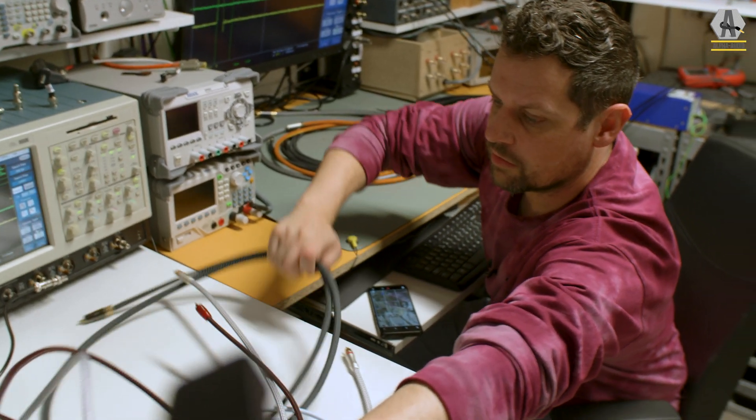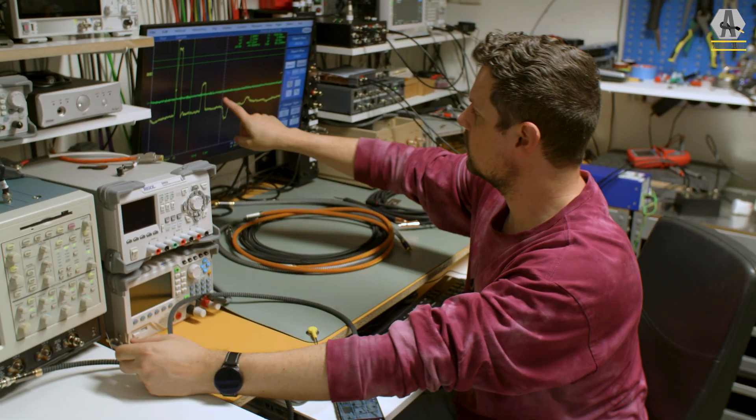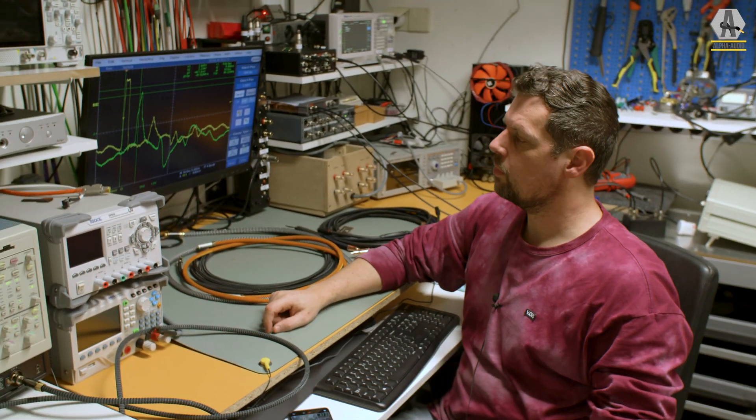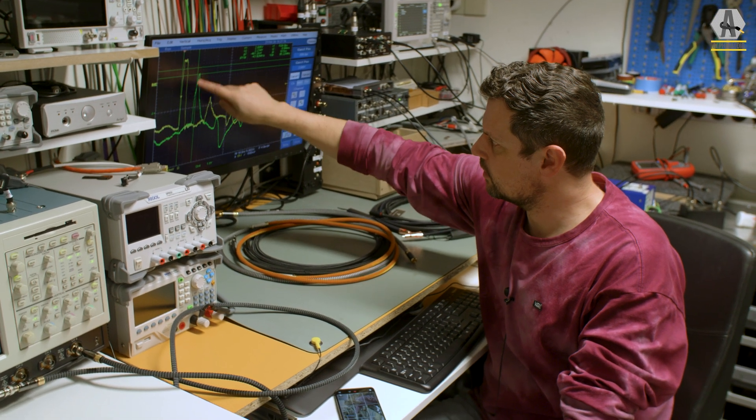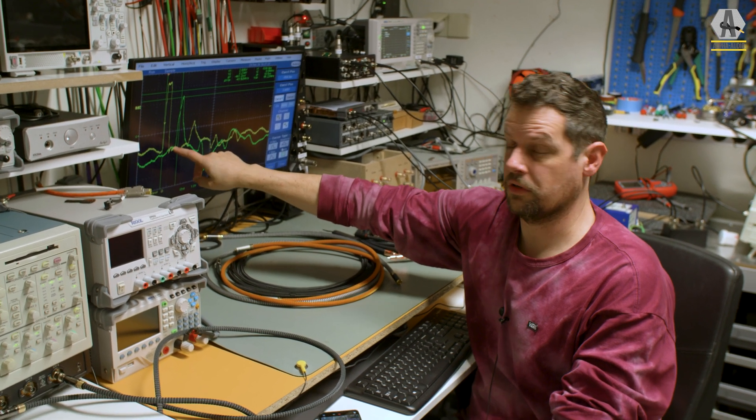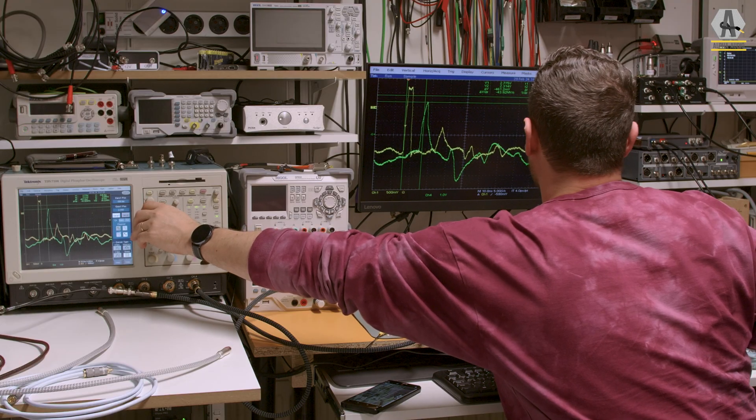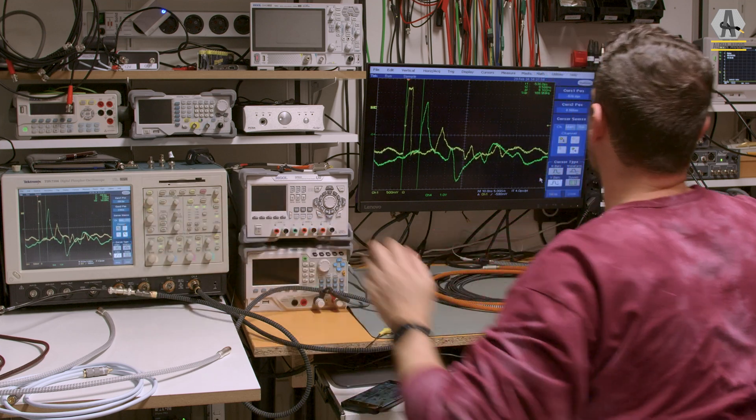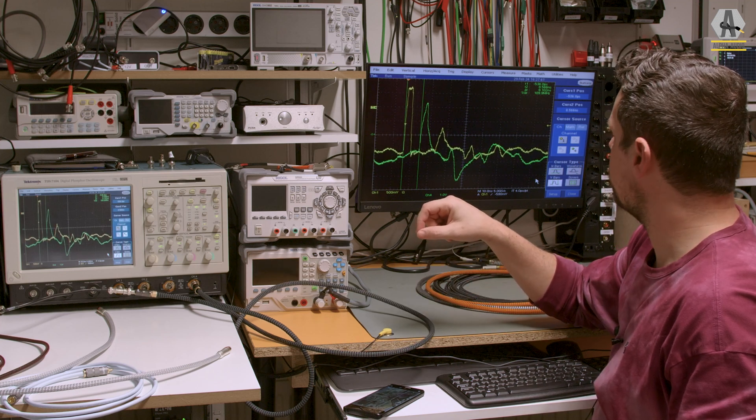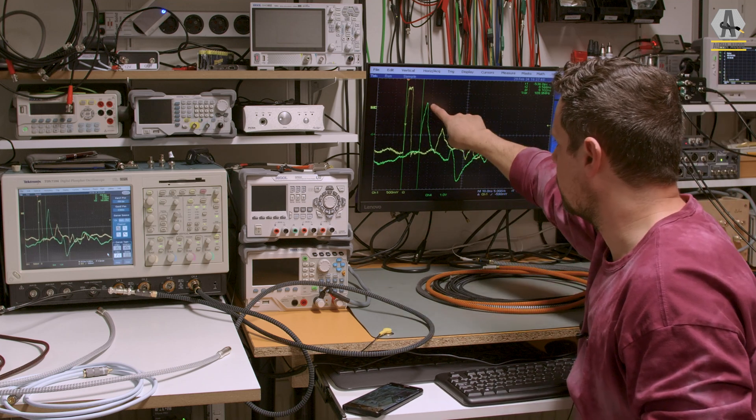If I grab another re-cable, a more expensive one, you can see the reflection pattern is different. This pulse is different - it's about the same height but the pulse is different. It is faster though, about nine nanoseconds, so this cable transfers the signal about 10% faster.